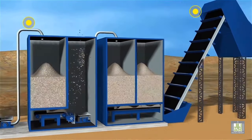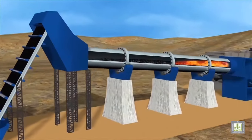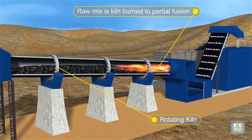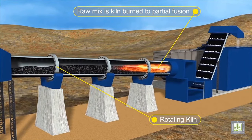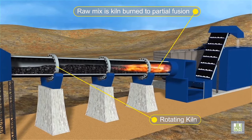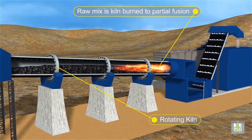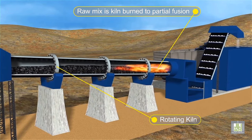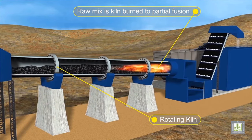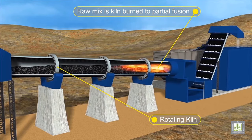This powder is fed into the kiln, where the heat promotes the necessary chemical reactions. The kiln exhaust gases are the main source of heat used to dry the raw materials.